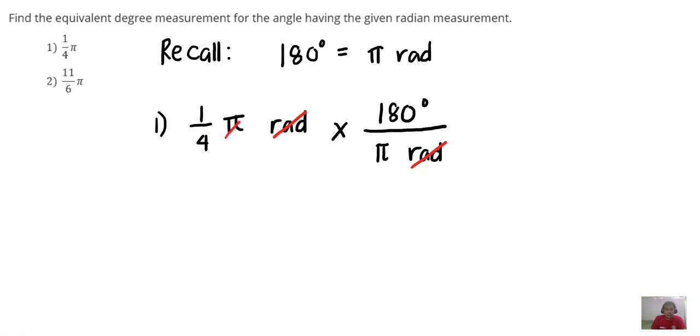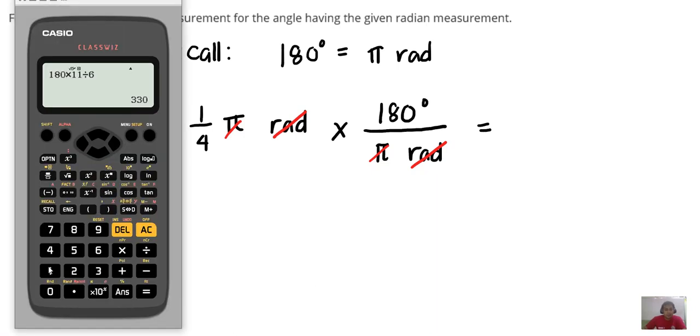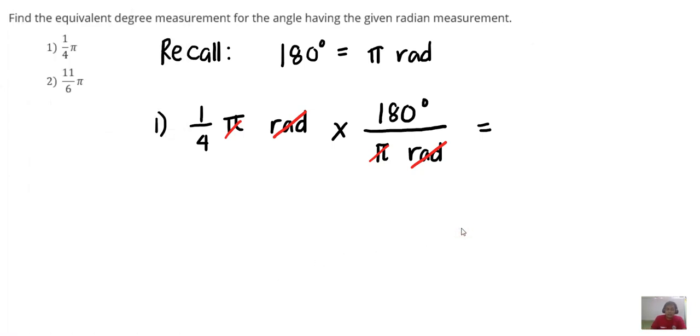Actually, here we can also cancel out pi and pi. So we are left with 1 fourth times 180. So that is basically 180 divided by 4. So 180 divided by 4 is equal to 45. So our answer for number one is 45 degrees.